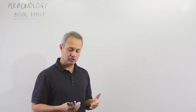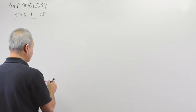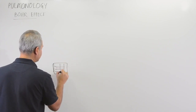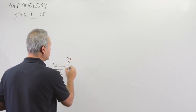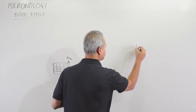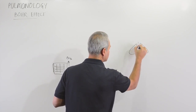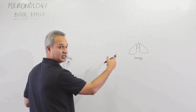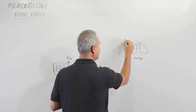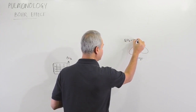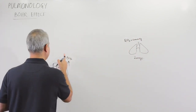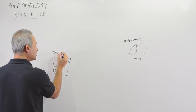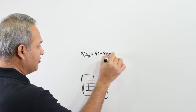Let's say we have a tissue here that is functioning and producing carbon dioxide. Over here we have lungs. The pressure of carbon dioxide at the lungs is low — P alveolar CO2 is 40 mmHg. Meanwhile, the pressure of carbon dioxide at the tissue is about 45 to 47 mmHg.